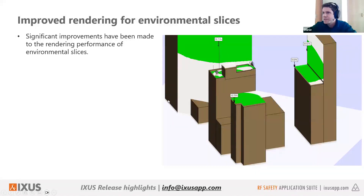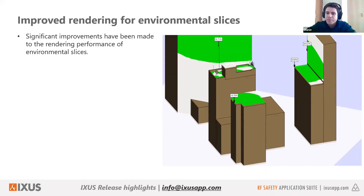The first improvement is the rendering for environmental slices. This is a bit difficult to demonstrate with a static picture, but in previous versions of XS there was quite a significant rendering performance drop when you had a lot of discrete environmental slices. This has now been worked on to provide a much better experience — it's essentially a drastic improvement in rendering performance, which will become more apparent in the modeler demonstration.